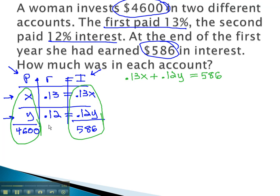Now, we can also get an equation from the first column. x plus y equals 4,600.